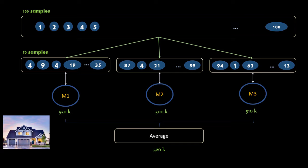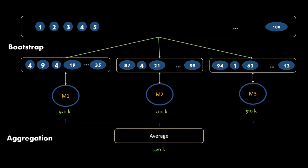This technique is also called bootstrap aggregation. When you create small subsets of the dataset using resampling with replacement, that procedure is called bootstrap. When you combine their results using either an average or majority vote, that is called aggregation. Hence bagging is also called bootstrap aggregation.